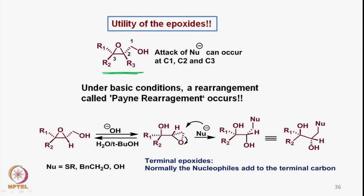Now what is the utility of these epoxy alcohols in the synthetic area? We have epoxy alcohols and we can anticipate that there are essentially three centers where a nucleophile can attack. One position is where the nucleophile can attack if we make the hydroxy group a leaving group—the nucleophile can attack at carbon number 1. It can also attack at carbon number 2, where the epoxide can be opened by nucleophilic attack, and also at carbon number 3. It all depends upon various conditions, which we will discuss.